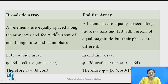In broadside array, all elements are equally spaced along the array axis and fed with currents of equal magnitude and same phase. Whereas in end fire array, the arrangement is the same for the number of elements, but the phase is different. In broadside array the phi value is given by one equation, whereas in end fire array the phi value is given by a different equation.